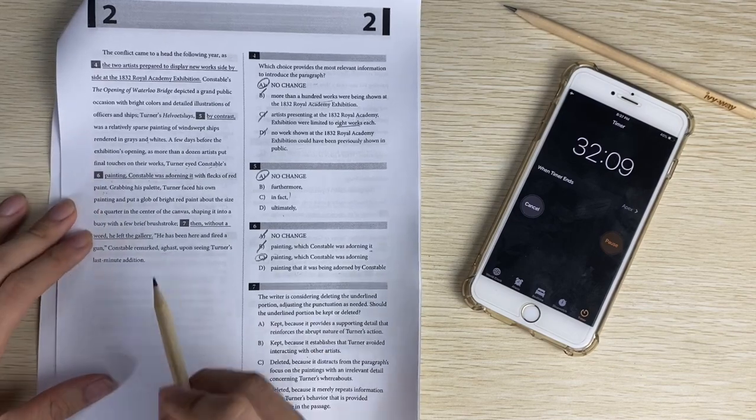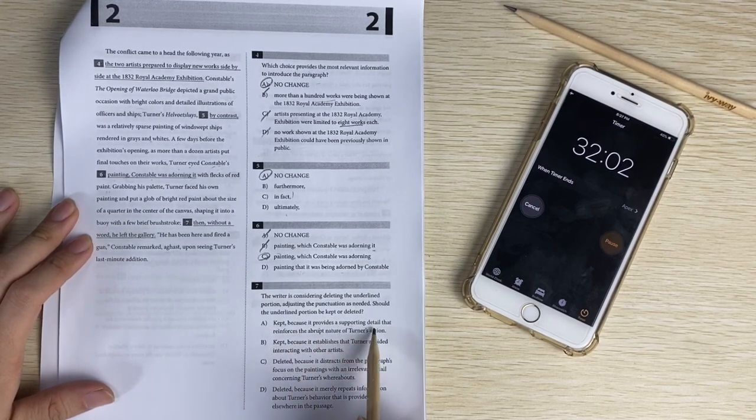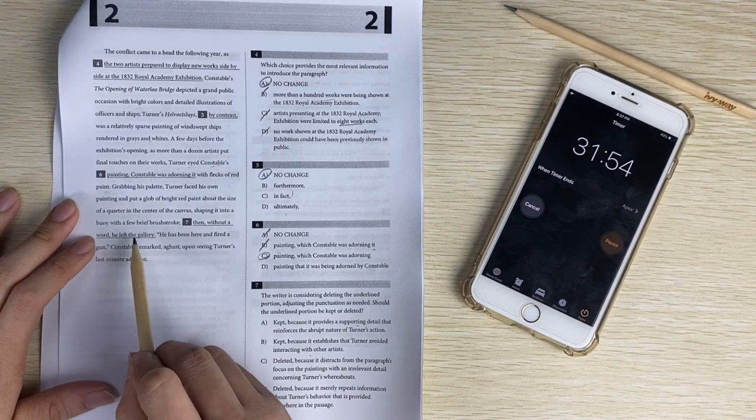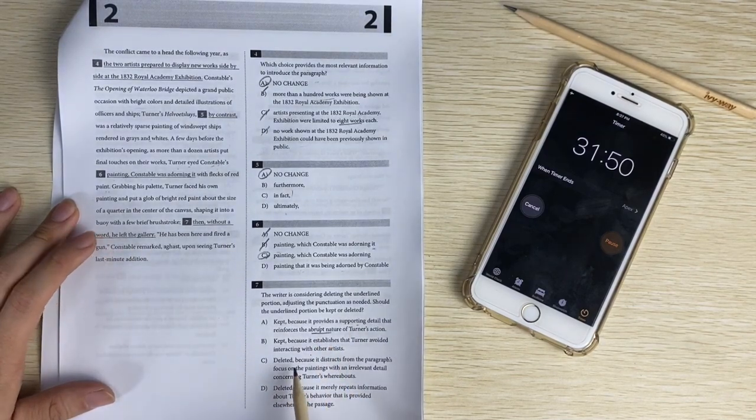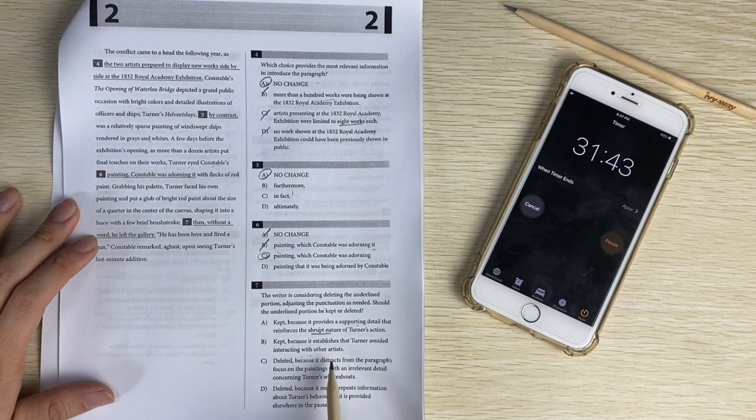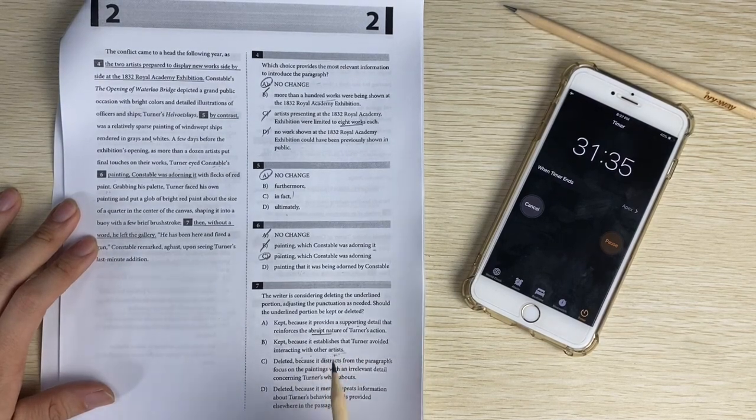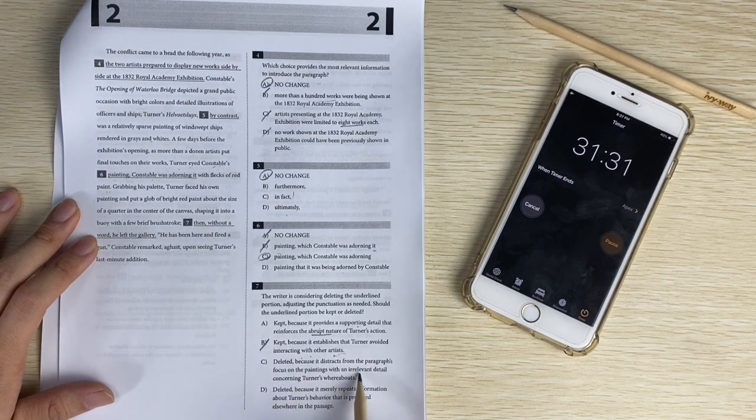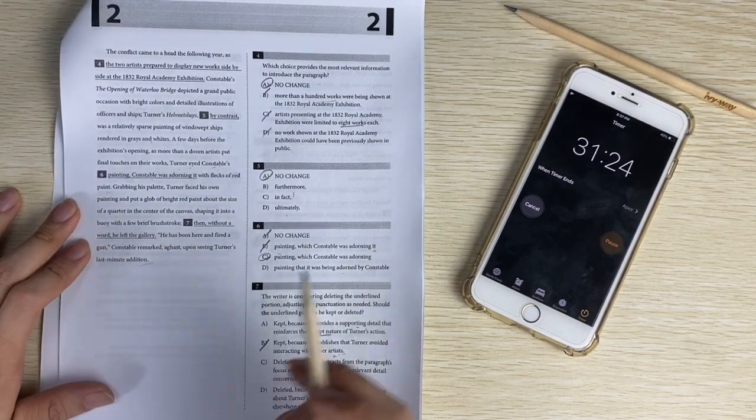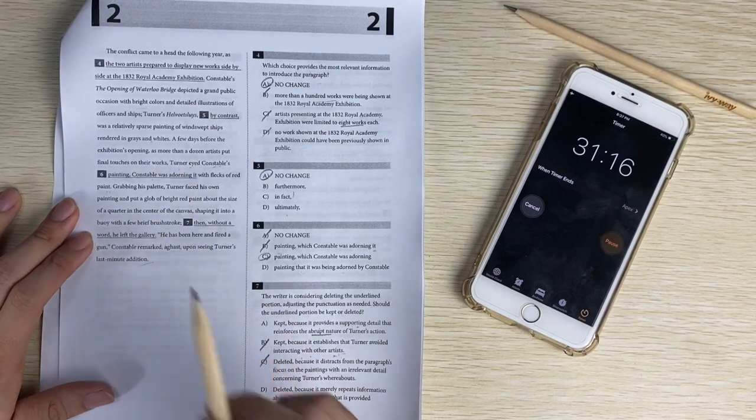Deleting the underlying portion. So this part, without a word he left the gallery. Look at the reasoning - because it provides a supporting detail that reinforces an abrupt nature. Without a word he left the gallery might be right because it's abrupt for without a word. Choice B, establish Turner avoided interaction with others - it's not interaction with other artists, so that's not it. It distracts from paragraph focus - it's not irrelevant because the next part also talks about what he's doing next. So C is wrong.